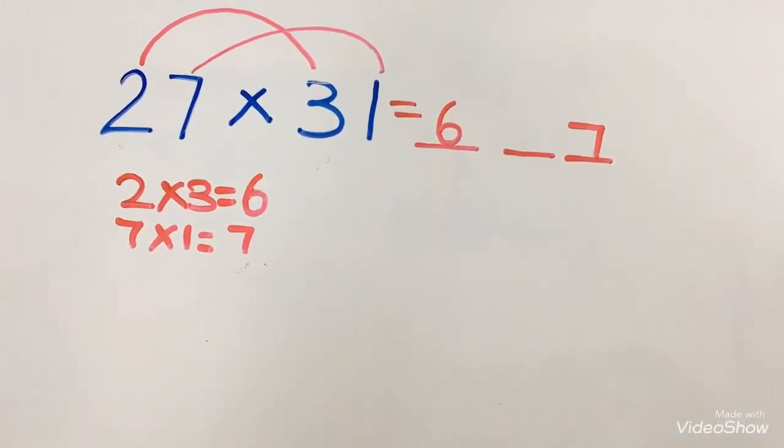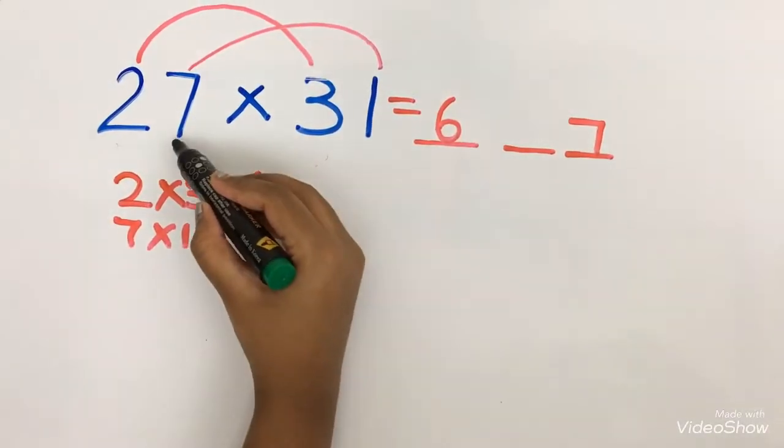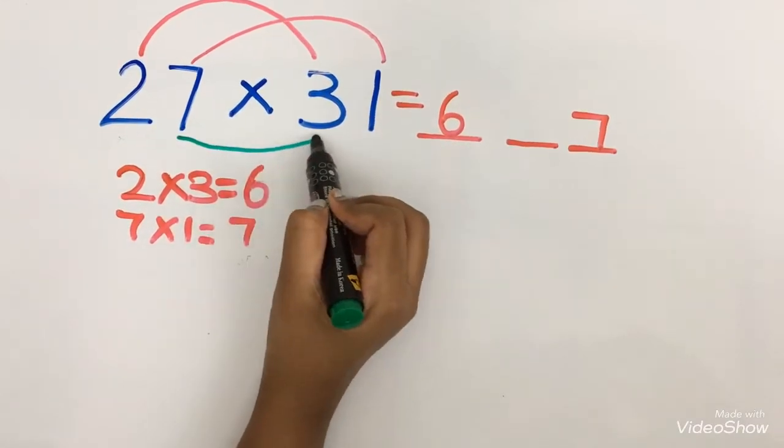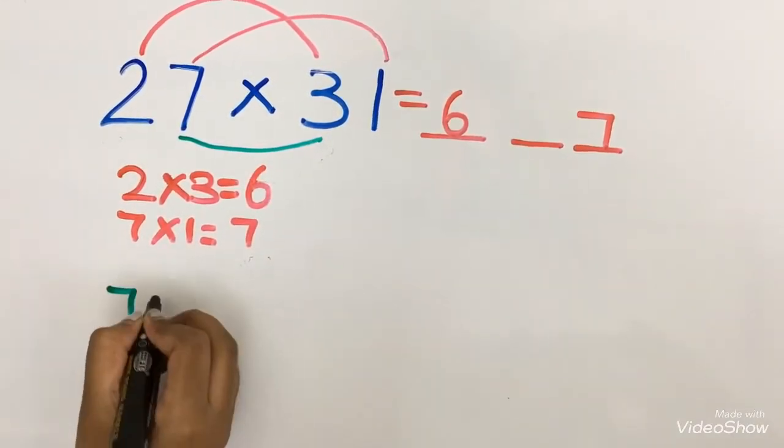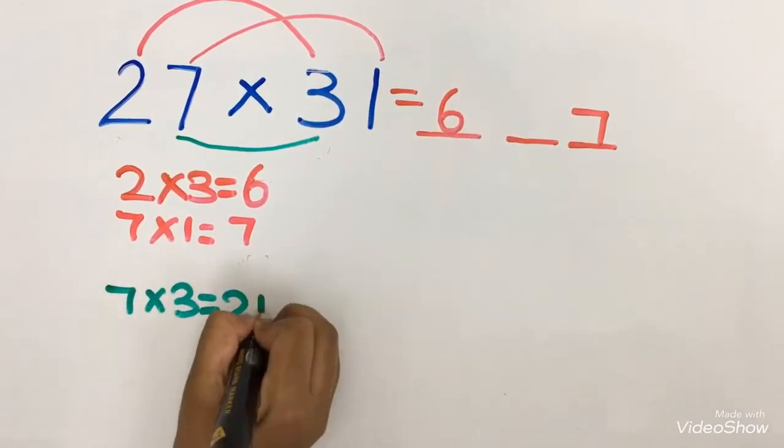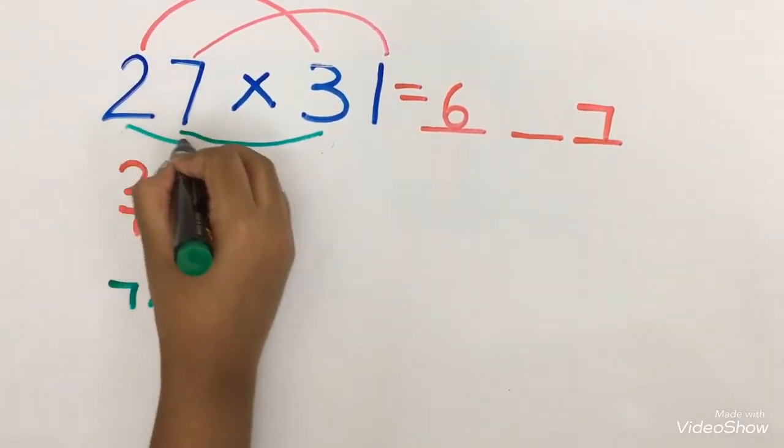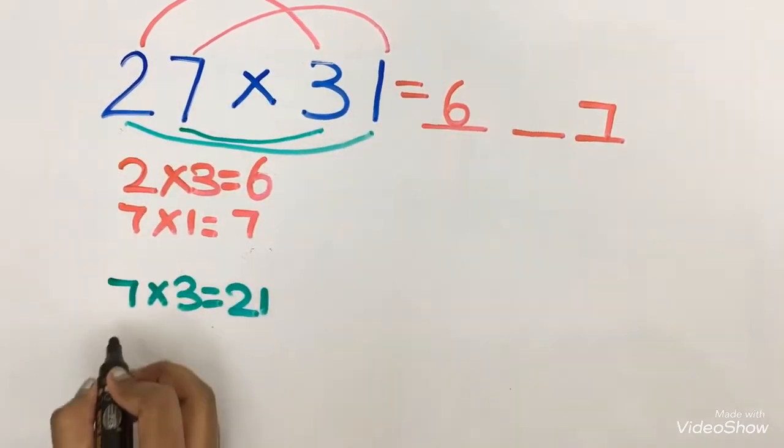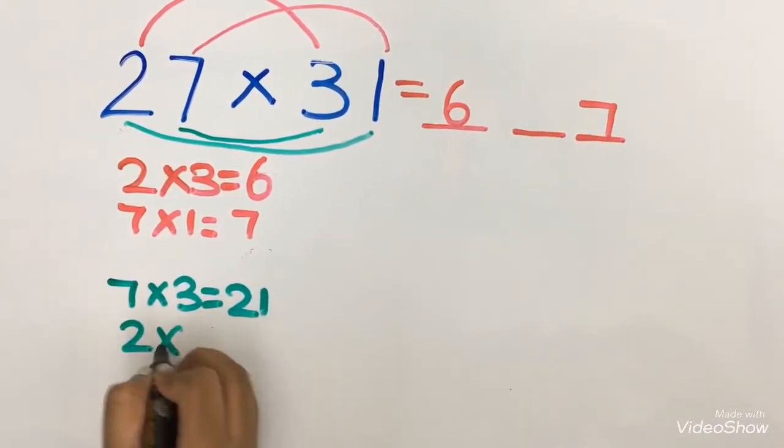Now we are going to multiply the middle numbers. The middle number 7 into 3. So 7 into 3 is 21. Now 2 into 1 is 2.